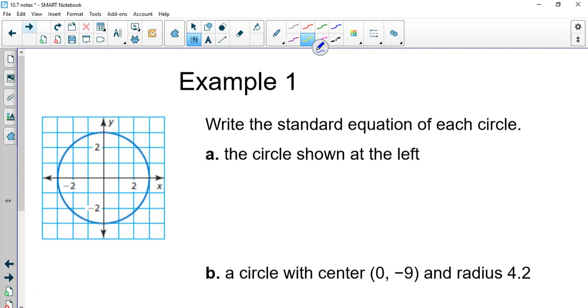This is the standard equation with HK at the center and R being the radius. So now we're just going to do some problems and practice that. Write the standard equation of each circle. The circle shown at the left is pretty simple because you can see where the center is. The center is at 0, 0. And the radius, be careful, is 3. So technically, this is X minus 0 squared plus Y minus 0 squared equals 3 squared. But we're just going to simplify and say X squared plus Y squared equals 9.